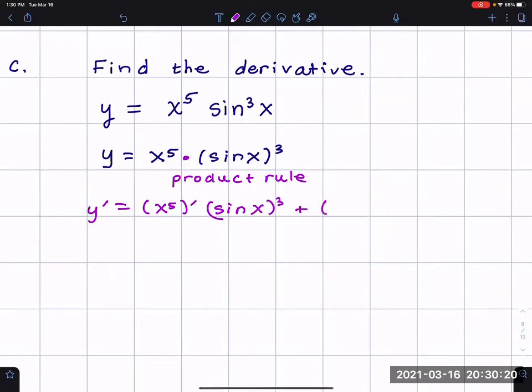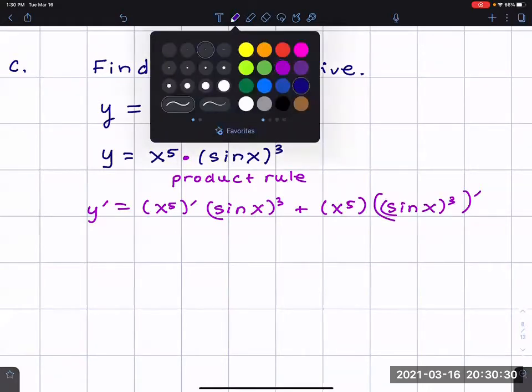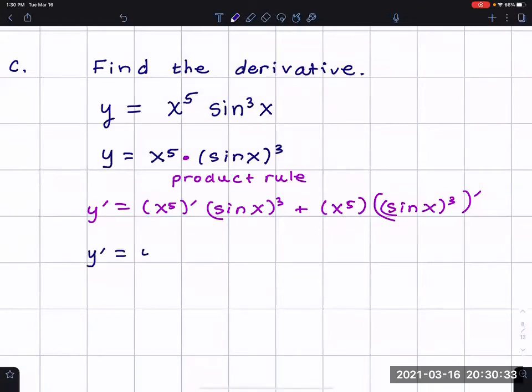Then I leave x to the fifth alone and take the derivative of sine x to the third power. The derivative of x to the fifth is straightforward—that's just the power rule. So we have five x to the fourth. Bring the five in front, then five minus one gives four, and I'll have sine x cubed.